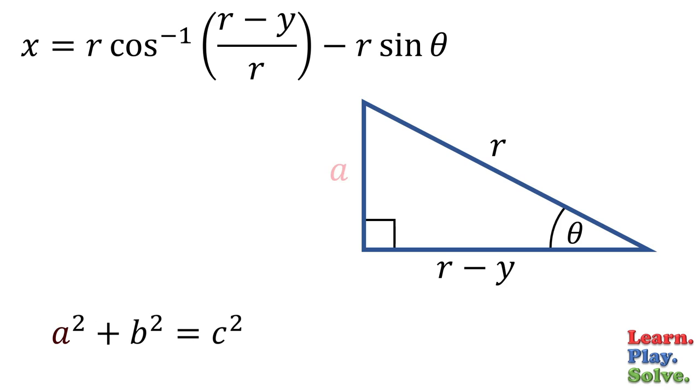We can use the Pythagorean theorem to solve for a. b is the other leg, r minus y, and c is the hypotenuse, r. Square the r minus y by foiling, then cancel out the r squared that's on both sides. Now move the other terms to the opposite side and take the square root. That gives us a.